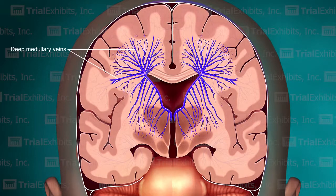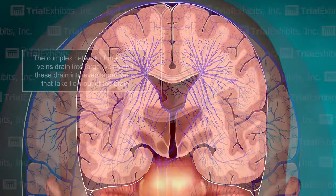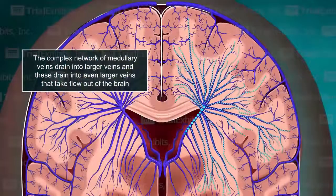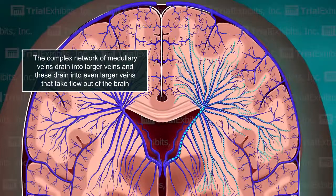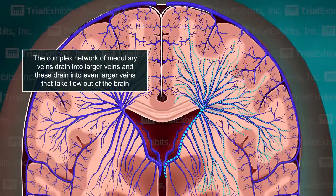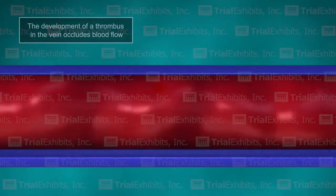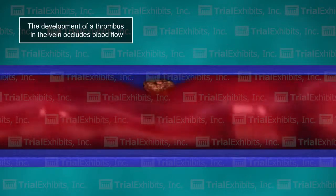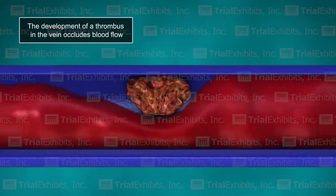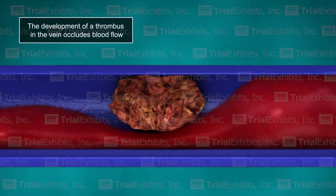Once the anatomy had been established, we animated flow through the veins, showing how the tiny medullary veins carry blood away from the deep tissues of the brain. Next, an enlarged view of a representative vein allowed us to animate the formation of a blood clot and to show how the thrombus effectively stops flow through the vein.